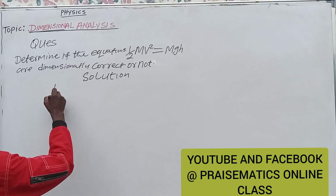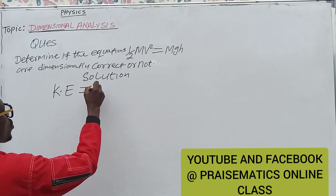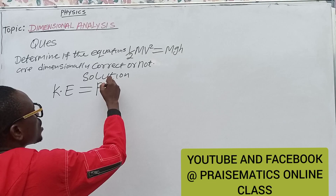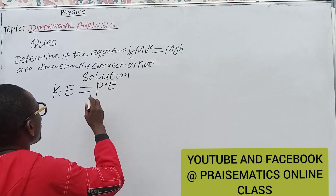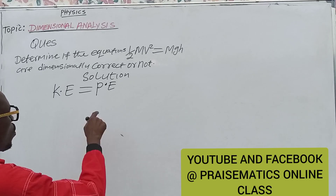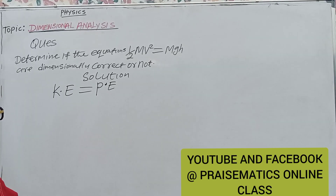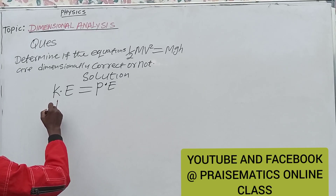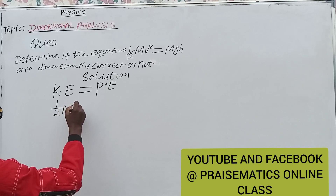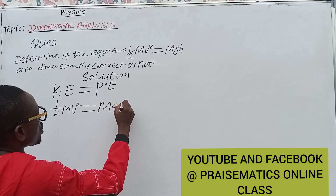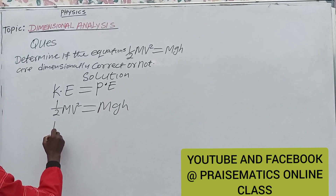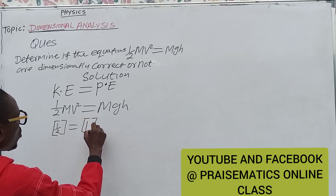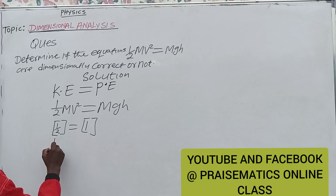Solution. Kinetic energy — is it equal to potential energy? We know kinetic energy is a type of energy that is in motion, while potential energy is a type of energy that is at rest. Now, kinetic energy, which is 1/2 mv², is it equal to mgh? Let's go to dimensions. Remember, the dimension of any pure number is equal to one — it has no dimension. Now, dimension of mass...